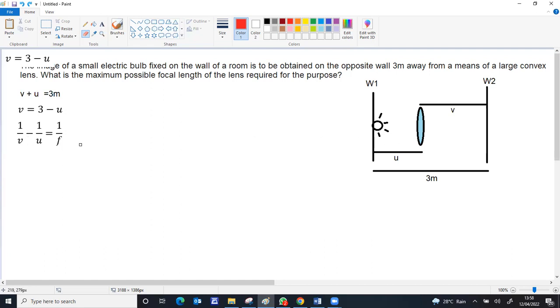U is negative, so it will be plus. 1/v is 1 over (3 minus u), and minus becomes plus because u is negative, equal to 1/f. Taking LCM, (u + 3 - u) over (3 - u)u equals 1/f. The u's get cancelled. If you cross multiply: 3f equals 3u minus u².